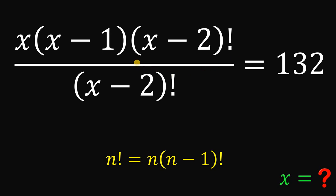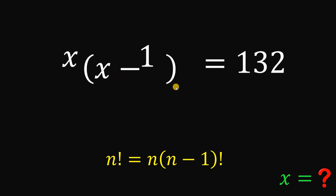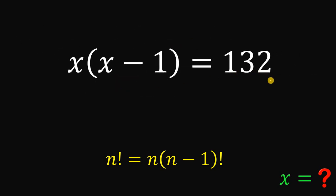Now, we have (x minus 2) factorial as a factor in the numerator, and (x minus 2) factorial in the denominator, so we can cancel both of them. Therefore, this simplifies to x multiplied by (x minus 1) equals 132. And we want positive values for x.